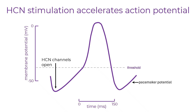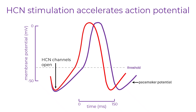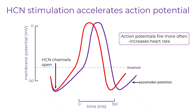Let's see what happens when HCN channel activity is stimulated by the sympathetic nervous system through beta receptor activation. After an action potential, as the nodal cell hyperpolarizes, HCN channels open more readily. This means the membrane begins to depolarize again sooner. The slope of the pacemaker potential also becomes steeper, so the cell reaches threshold more quickly. Even if the duration of the action potential itself doesn't change, repolarization occurs earlier, and the interval between action potentials is shortened. As a result, action potentials fire more frequently, which increases the heart rate.